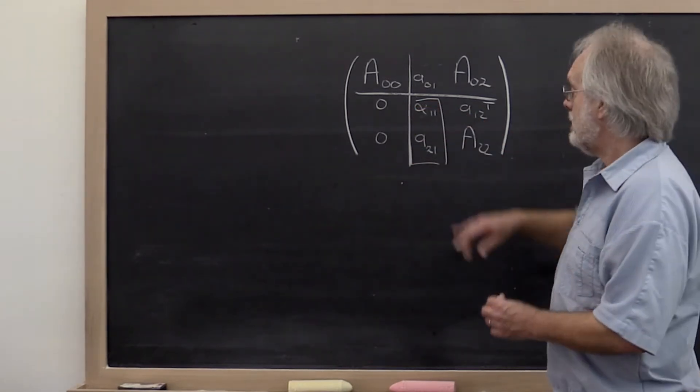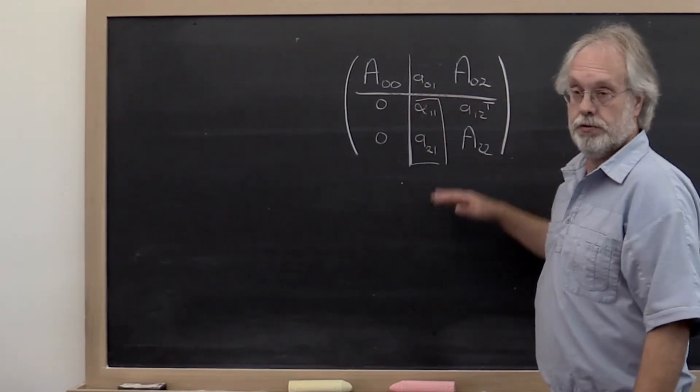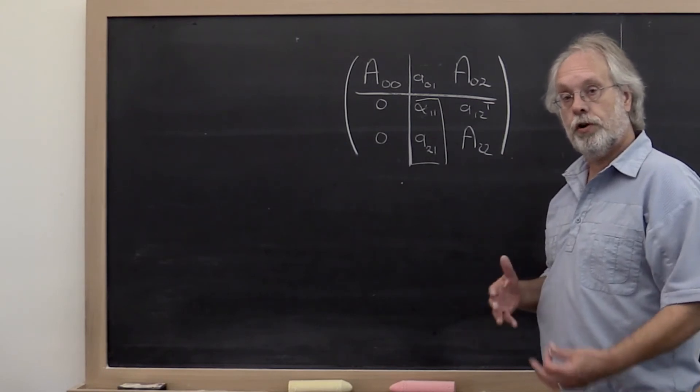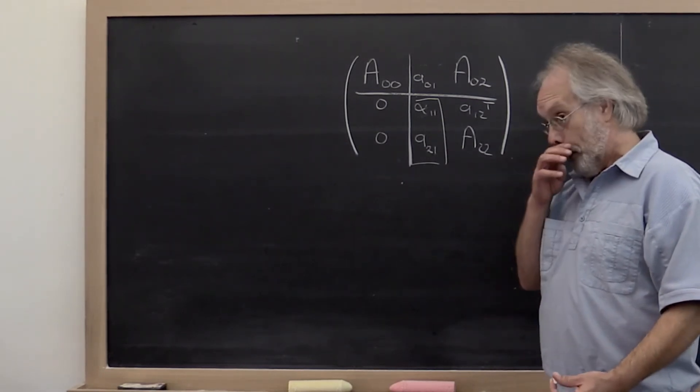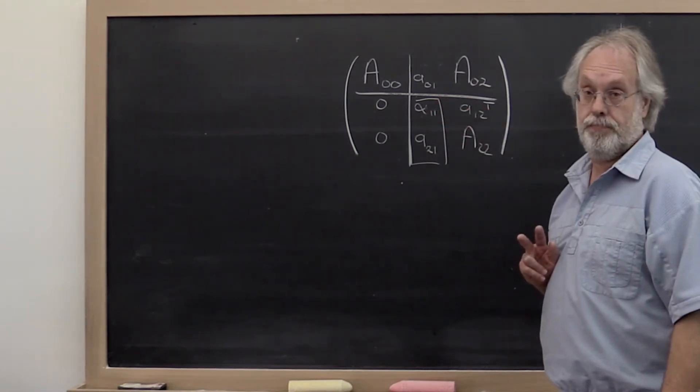Now notice that that means we're not permuting all of these entries and therefore all of these rows. We're really looking for a very special case of a permutation that swaps two rows.